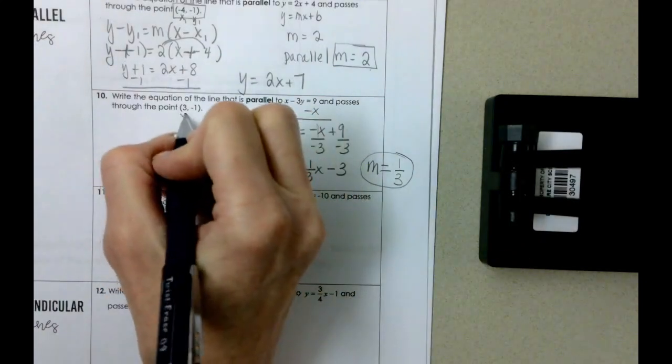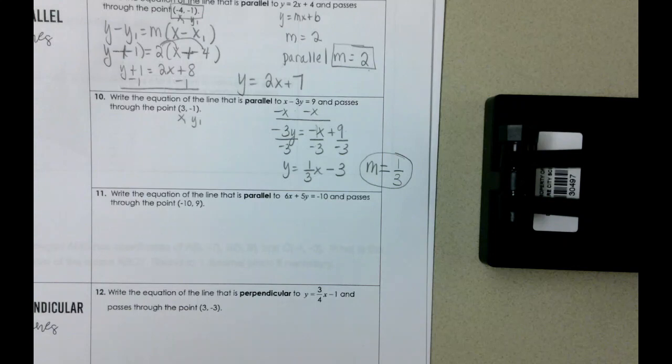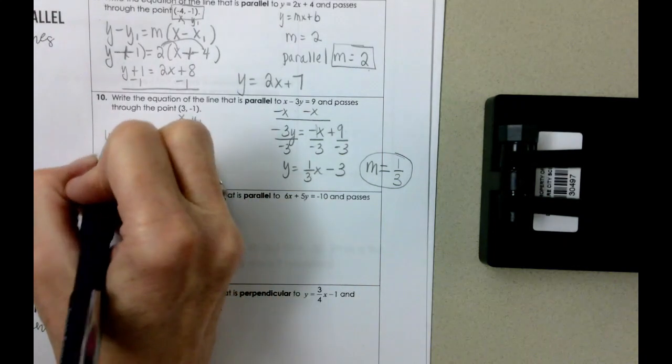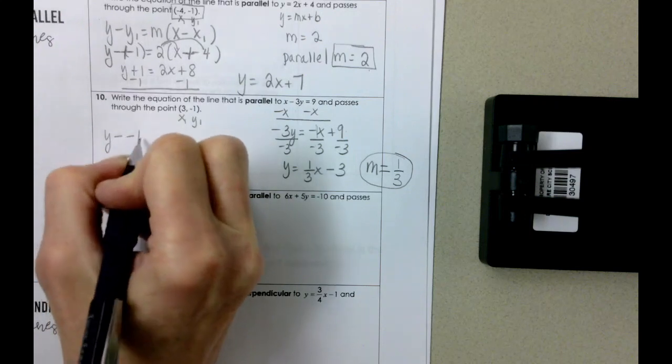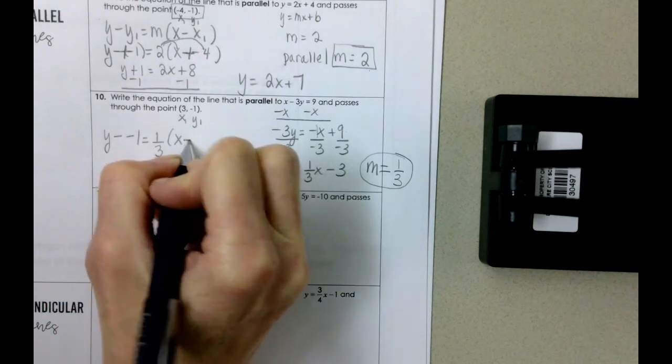When we go back and combine it with our point that we're given and put it into point slope form, y minus y1 equals m times x minus x1.